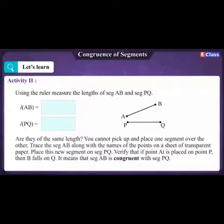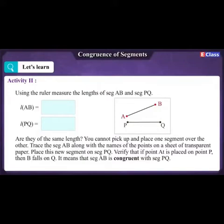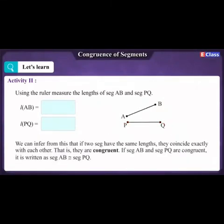You cannot pick up and place one segment over the other. Trace segment AB along with the names of the points on a sheet of transparent paper. Place this new segment on segment PQ and verify that if point A is placed on point P, then B falls on Q. This means segment AB is congruent with segment PQ.